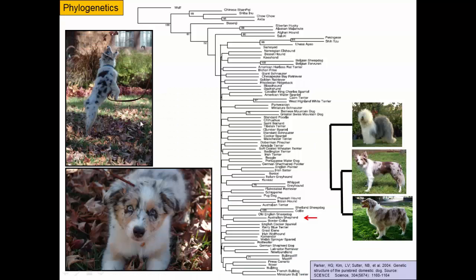In the phylogeny, Australian Shepherd is sister taxa with Border Collie. They do look very similar — Border Collies have erect ears, Australian Shepherds have floppy ears, but much of the rest is the same: both are very intelligent, very high energy breeds. What's more of a surprise is that the next closest relative is an Old English Sheepdog, which basically has eyes hidden under its fur. We wouldn't have expected that — maybe we'd have expected a Lab or a German Shepherd. But in retrospect it makes sense: that's also a herding dog, which is the function of these dogs as well.